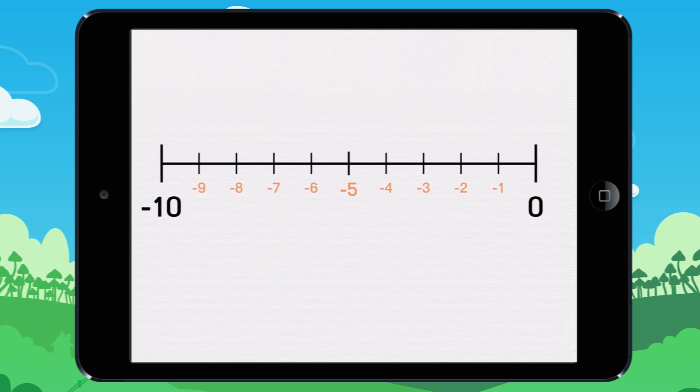If you only take half the number line, you get a number line marked from minus ten to zero that progresses by ones from minus ten to zero.